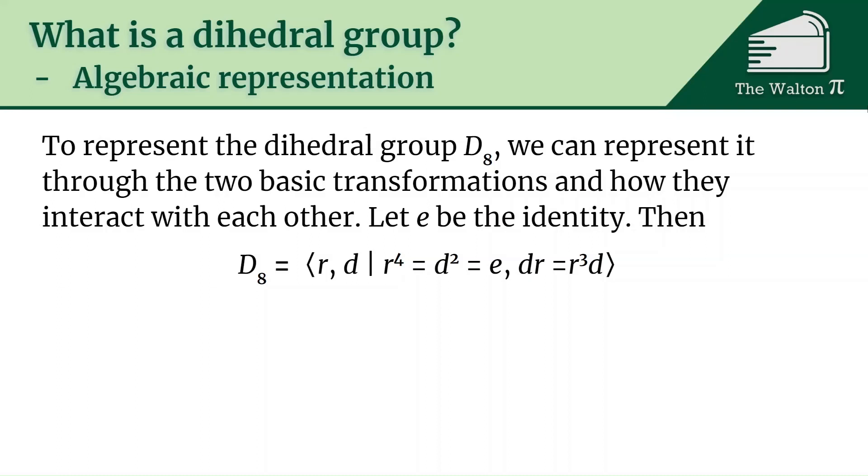Here's how we would read this. We have D_8 equals the set generated by r and d. So it's generated by rotations and reflections, and then we say how do those interact with each other. The vertical line means such that—so it's the group generated by r and d such that r to the fourth is equal to d squared is equal to e, the identity. So r to the fourth and d squared both cancel out to just be the identity. But then we also have dr equals r cubed d. So if we do a reflection and then a rotation, that's the same thing as doing three rotations and then a reflection.